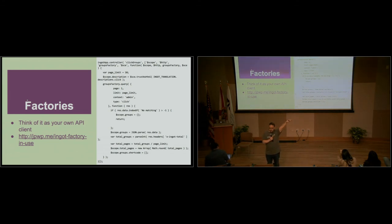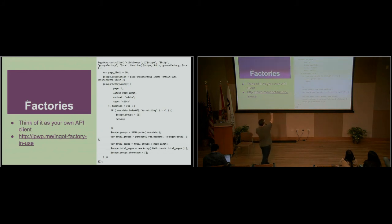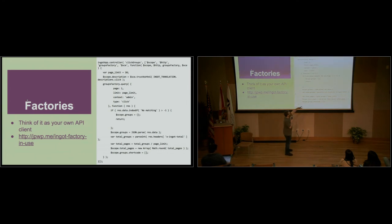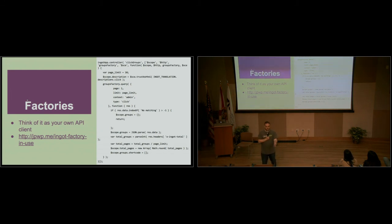Here's the example of it. I'm injecting the groups factory into this controller. Instead of making an HTTP request directly, I say 'groupsFactory.query,' page equals 1, limit equals 10, context equals admin. These are just URL parameters put into my GET request. And then when it's done, I run that callback. If I get back no matching results, we don't have any data — that's my pagination. But what we normally do is say scope.groups equals the data, scope.totalGroups — we get our header. When you do a core endpoint, it will give you x-total-pages, x-total-posts, these sorts of things. So we have x-ingot-total, which gives us our total, and we're able to do a little bit of math to handle pagination in our interface.